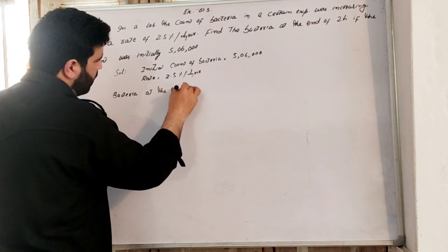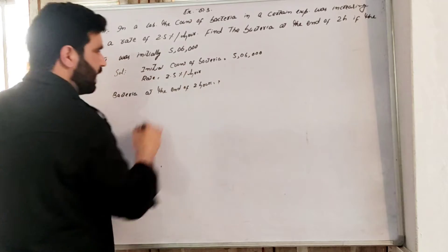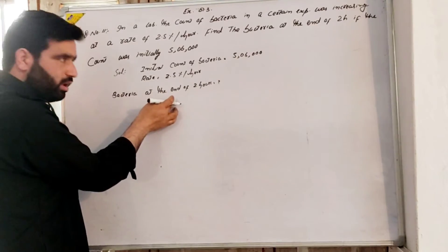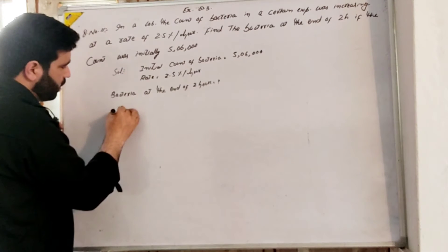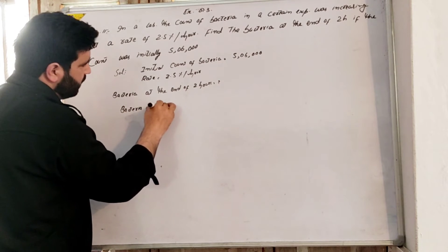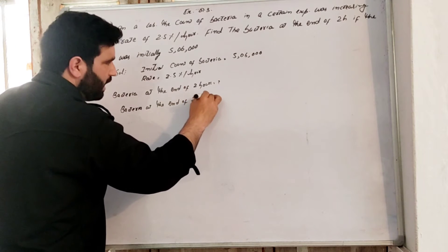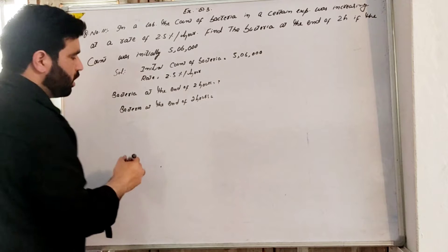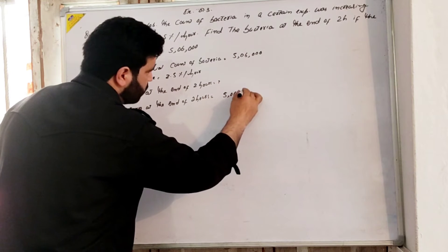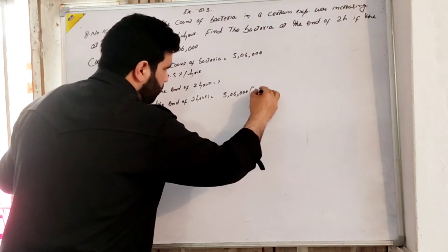After 2 hours, the bacteria count will be calculated using compound interest formula. After 2.5 percent per hour for 2 hours, the principle should be 506,000 into 1 plus rate, which is 2.5 divided by 100, raised to the power n.